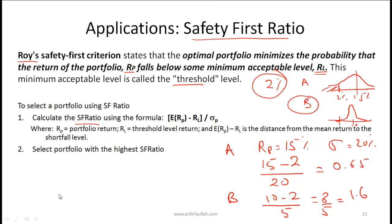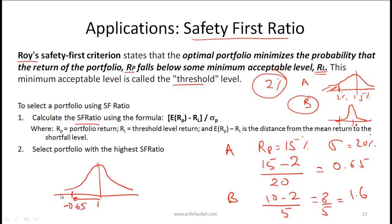The safety first ratio can be interpreted as a z-value. A ratio of 0.65 means the z-value is minus 0.65, and 1.6 means the z-value is negative 1.6. The higher the safety first ratio, the further to the left we are on the probability distribution, and therefore the lower the cumulative probability of falling below the threshold. The key rule: select the portfolio with the highest safety first ratio.